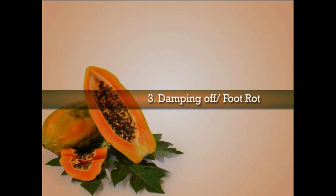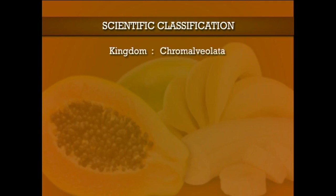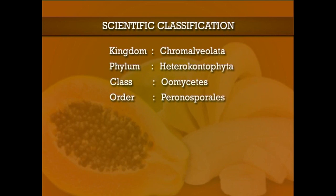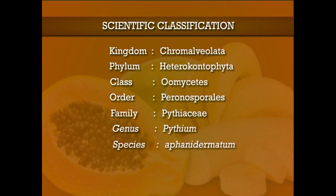The next disease is damping off or foot rot. Foot rot is also known as collar rot, stem rot, or root rot, and also damping off. It is the most serious disease of papaya. In nursery plants, damping off symptoms are produced, whereas in adult plants, foot rot and collar rot symptoms are produced. Scientific classification: Kingdom Chromalveolata, phylum Heterokontophyta, class Oomycetes, order Peronosporales, family Pythiaceae, genus Pythium, species aphanidermatum.